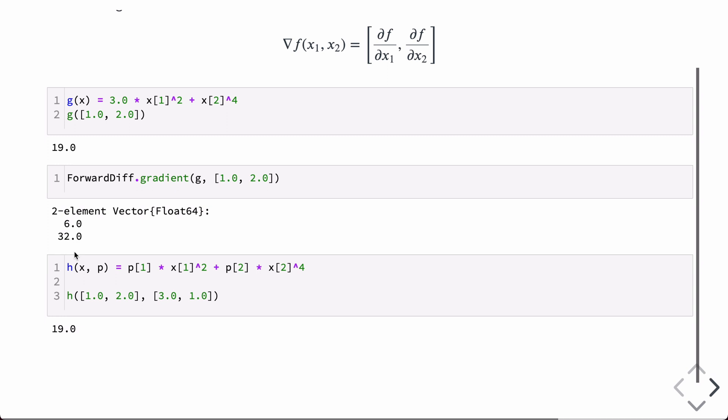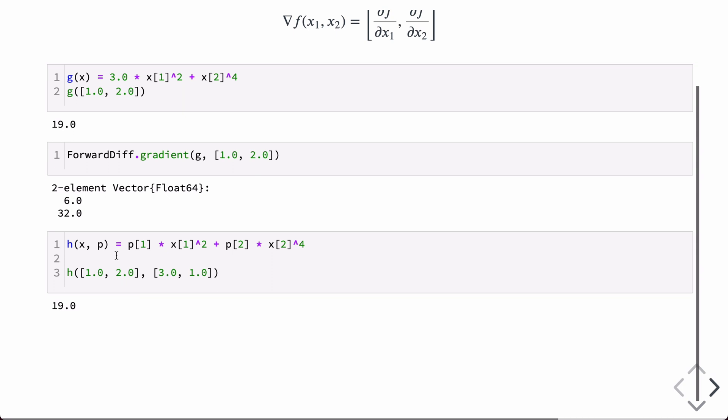This is another example. I define another function that takes a second argument, p, but p is just going to be the coefficients of the equation. So in this case, to reproduce the same functionality as g, if we put in 3 for p1 and 1 for p2, we'll basically have the exact same equation as g. And I'm verifying that, that if you call h at x1 equal to 1, x2 equal to 2, p1 equal to 3, p2 equal to 1, then you do, in fact, get 19 back.